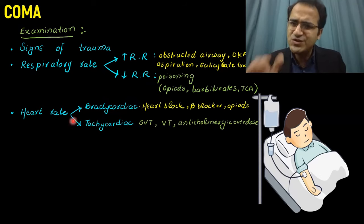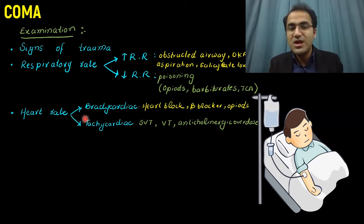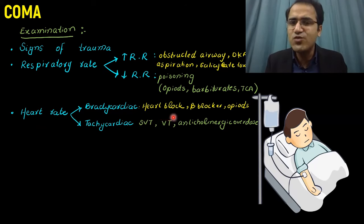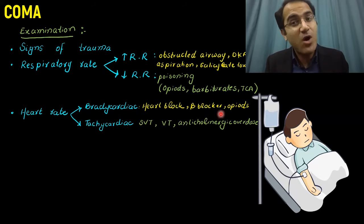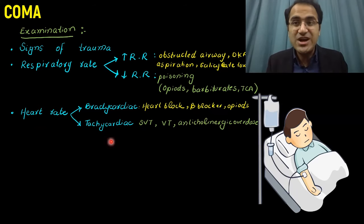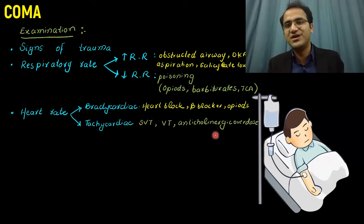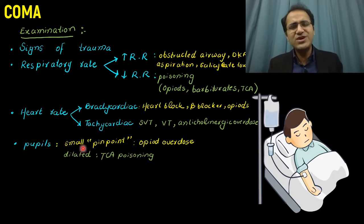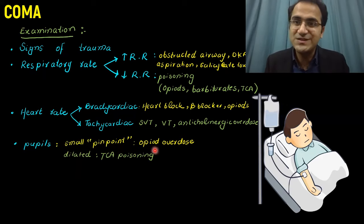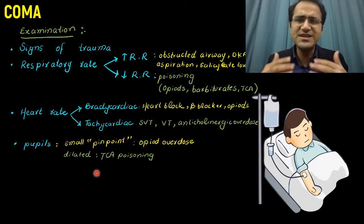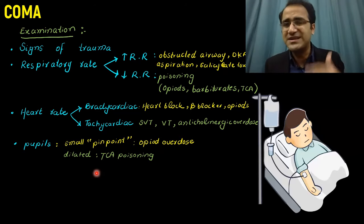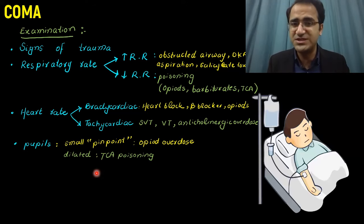Check the heart rate — whether it is bradycardic, tachycardic, or normal. If the patient is bradycardic going toward heart block, suspect beta blocker or opiate intake. If the patient is tachycardic, they may be in supraventricular tachycardia, ventricular tachycardia, or anticholinergic overdose — any anticholinergic drug can cause severe tachycardia and arrhythmia. Then look at the pupils: small pinpoint pupils are most likely seen in opiate overdose; dilated pupils are seen in TCA poisoning.